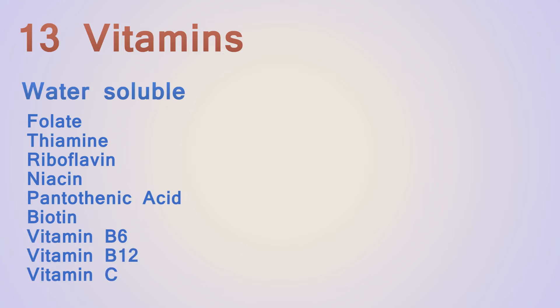There are 13 vitamins which can be broken down into two very different groups: the water soluble vitamins, which are all 8 of the B vitamins and vitamin C, and fat soluble vitamins, which are vitamins A, D, E, and K.